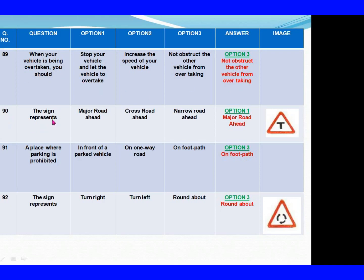Question 90: The sign represents. Option 1: Major road ahead. Option 2: Closed road ahead. Option 3: Near road ahead. The right answer is Option 1: Major road ahead. Question 91: A place where parking is prohibited. Option 1: In front of a parked vehicle. Option 2: On one-way road. Option 3: On footpath. The right answer is Option 3: On footpath.